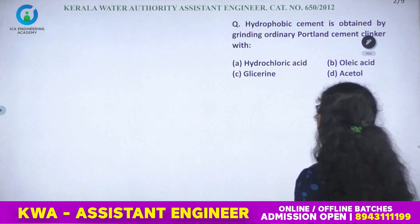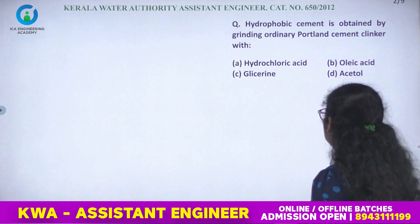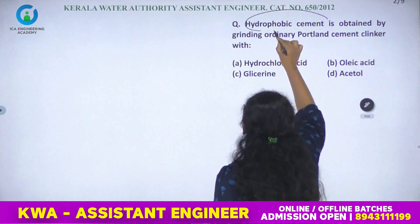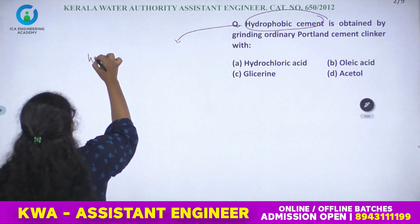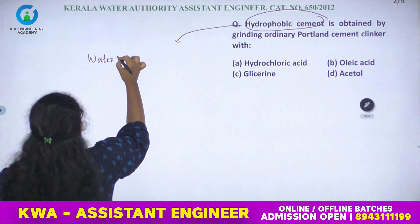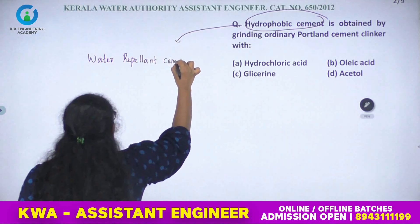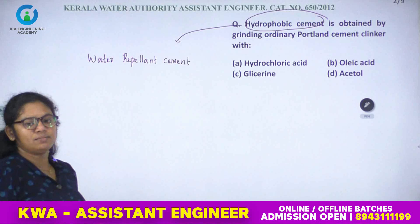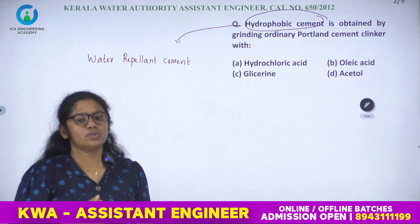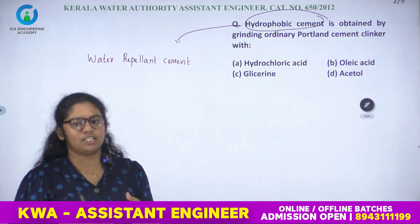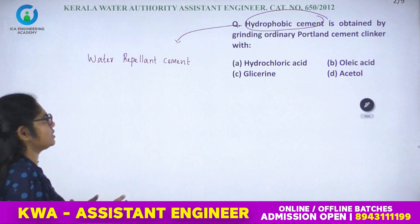The first question: hydrophobic cement is obtained by grinding the ordinary Portland cement clinker with what? Hydrophobic cement is a water-repellent cement. This cement is used for reducing the wetting ability of cement grains.